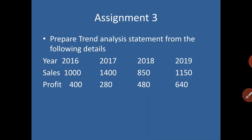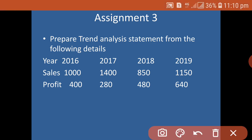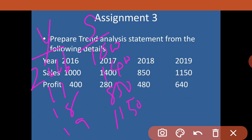I am giving you an assignment: prepare a trend analysis statement from the following details — years 2016, 17, 18, 19 with sales and profit figures. As a clue, we will provide the column for year, then a sales column showing 1000, 1400, 850, and 1150, then a trend percentage column for sales.